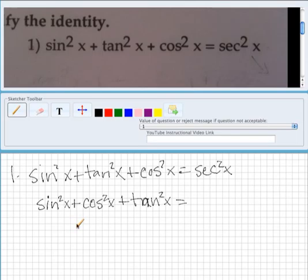So this right here is equal to 1. That's one of our identities. So 1 plus tangent squared x equals secant.